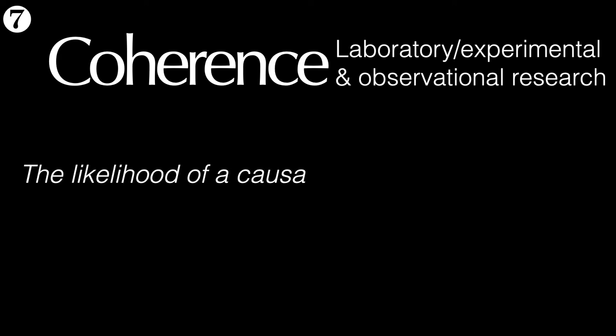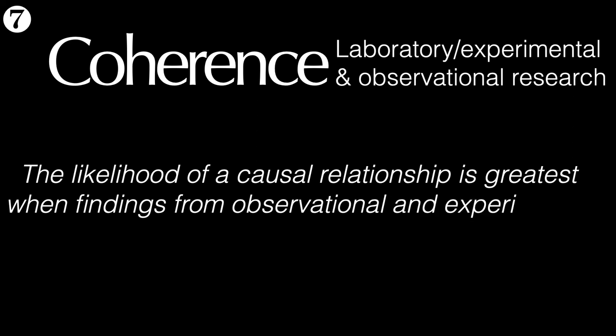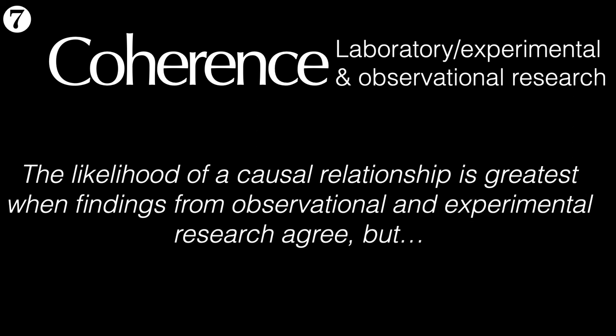Number seven is coherence, meaning the likelihood of a causal relationship is greatest when findings from observational and experimental research agree. A general rule of thumb is to first observe an association and then test whether it is causal within experimental work, but this won't always get the right answer if we don't get the parameters of the experiment right. One example is selenium deficiency, which is associated with Kashin-Beck disease, but only in the presence of other risk factors. If we made people selenium deficient in the absence of those other factors, we might incorrectly think there was no causal link.